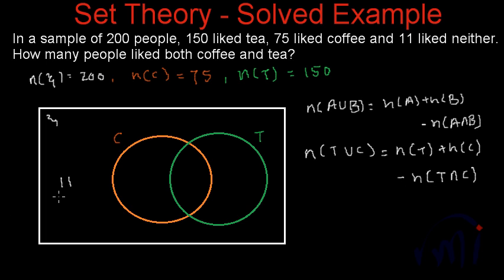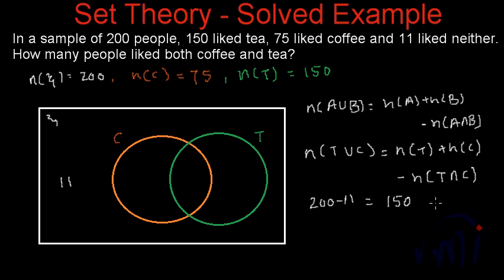We don't know how many people like both, but we know there are 11 people who neither like coffee nor tea. So the number of people who like either coffee or tea equals 200 minus 11. And this equals N(T) — the people who like tea, that is 150 — plus N(C) — the people who like coffee, that is 75 — minus N(T intersection C), the people who like both tea and coffee.